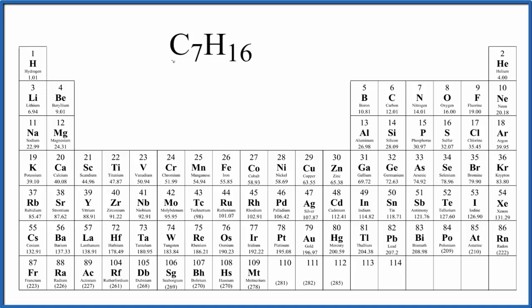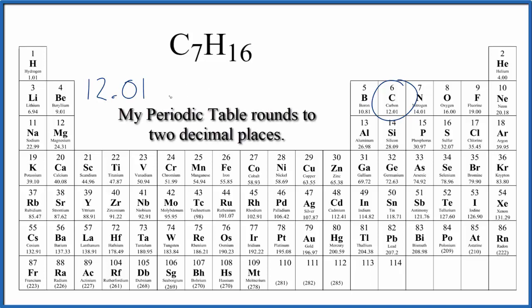To find the molar mass, we'll first look at carbon on the periodic table. That's right here, 12.01. The units are grams per mole, but let's write those at the end.